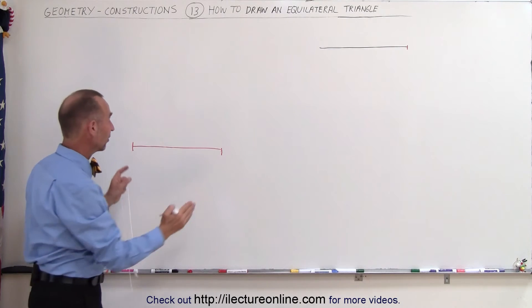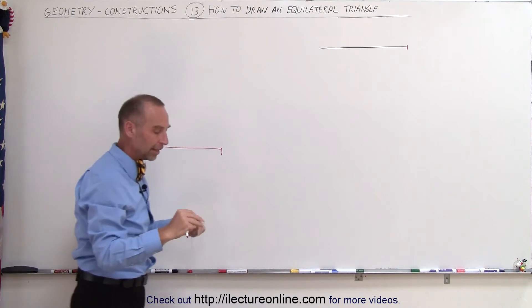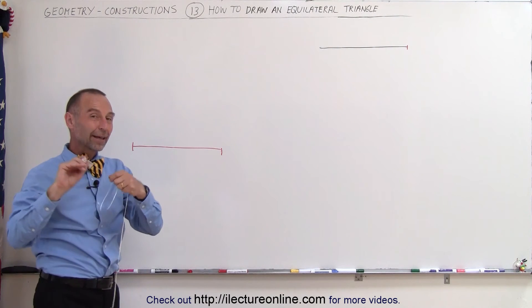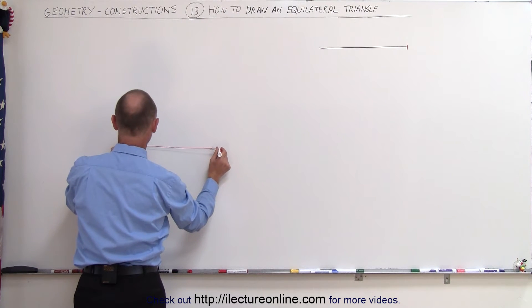There we go, so now I know that this line is the exact same length as the line I have over there. Now the next thing I want to do is continue with your compass at the exact same length, so I want to make sure this is the same length as before.